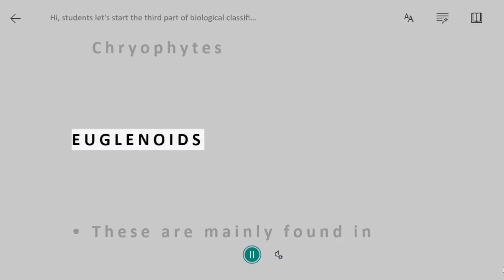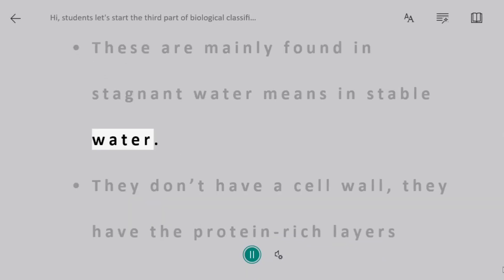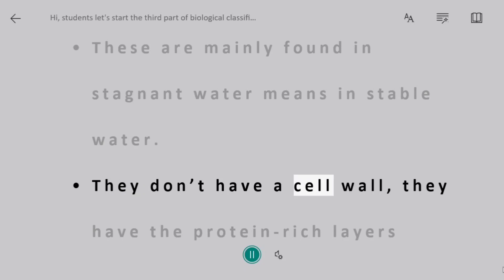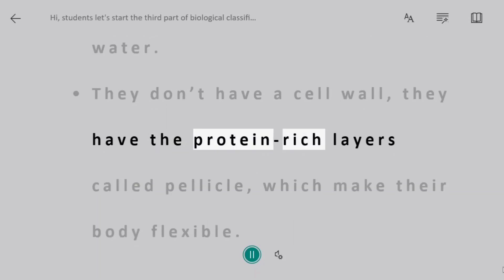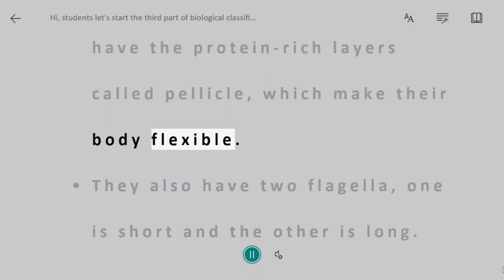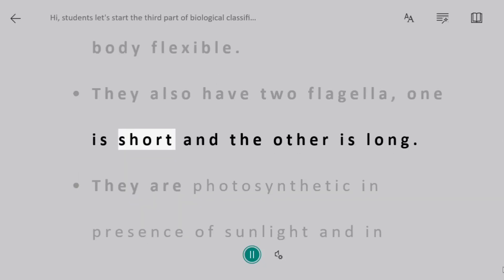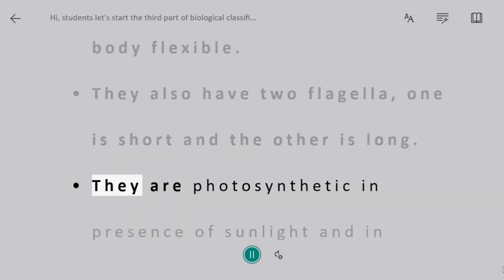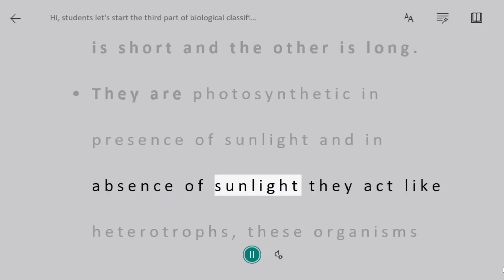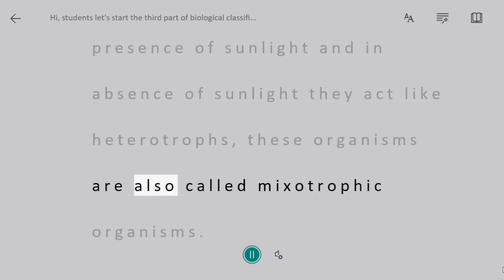Euglenoids. These are mainly found in stagnant water. They don't have a cell wall; instead they have protein-rich layers called a pellicle, which makes their body flexible. They also have two flagella — one short and one long. They are photosynthetic in the presence of sunlight, and in the absence of sunlight they act like heterotrophs. These organisms are also called mixotrophic organisms.